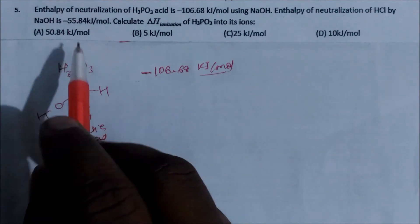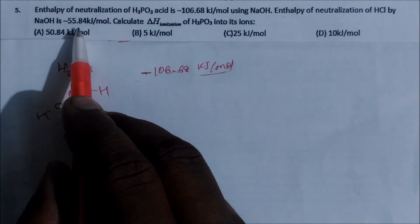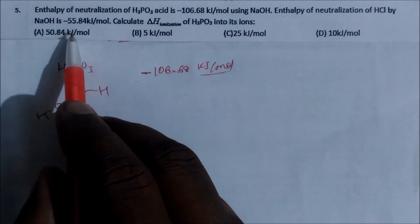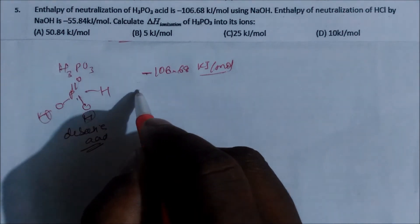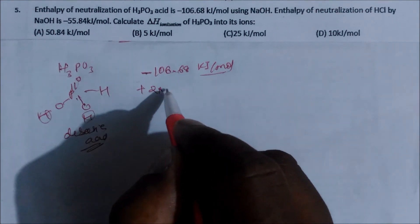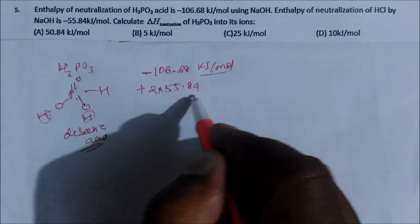And for the utilization of one H+, we require minus 55.84. For one. So if you take for two hydrogen utilization, we require how much? If you add it, 2 into 55.84. So this is the total energy.